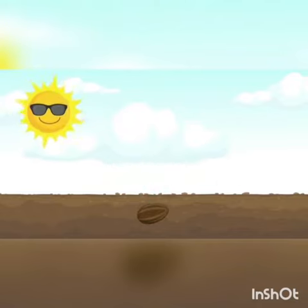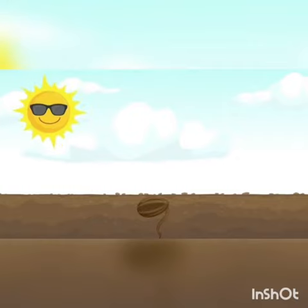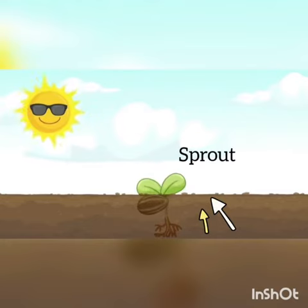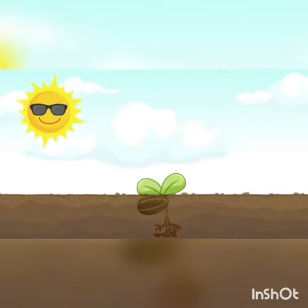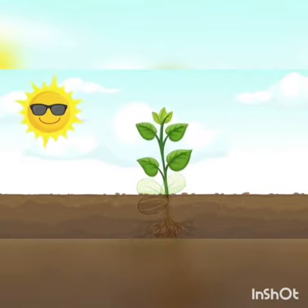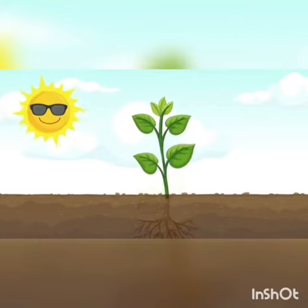The next stage is called a sprout. This is when the plant grows from a seed and pushes up through the soil. The sprout also needs sunlight, water and nutrients from the soil to grow.